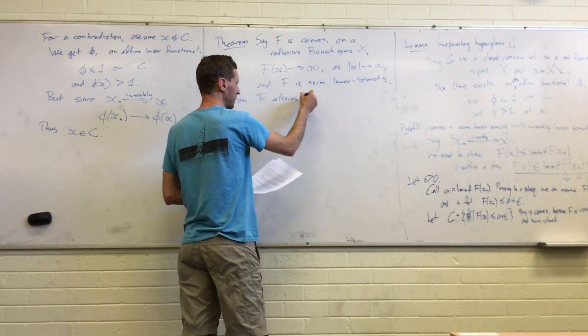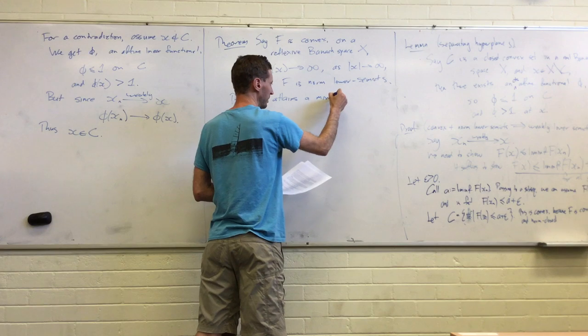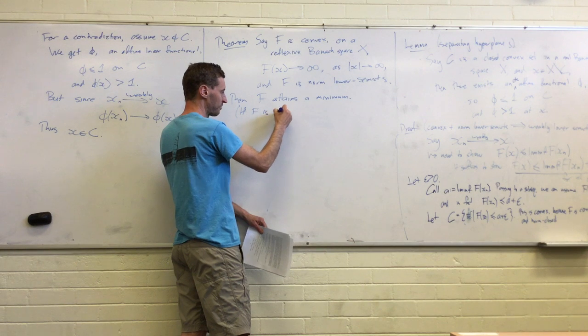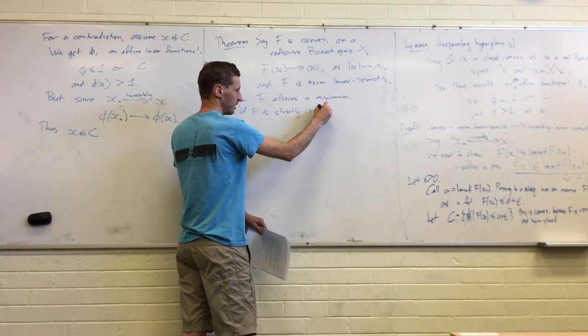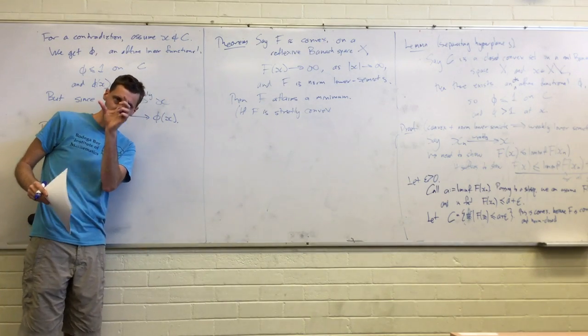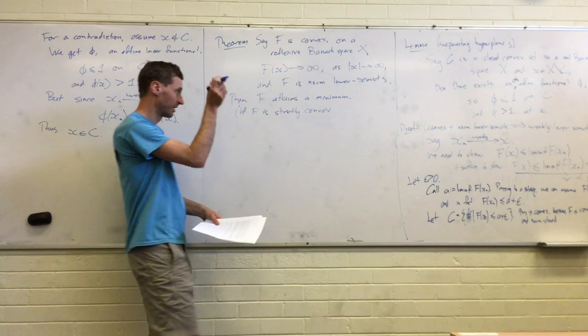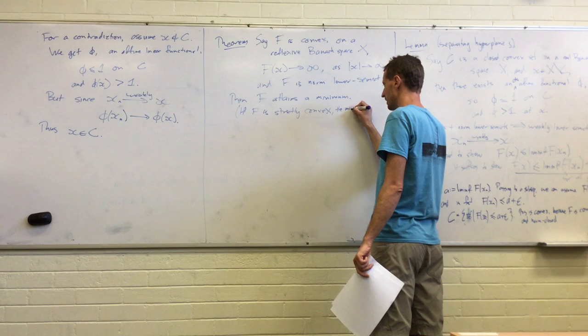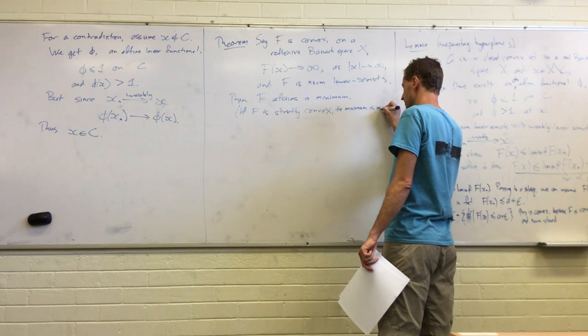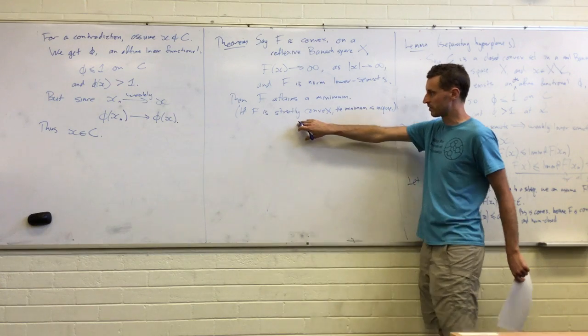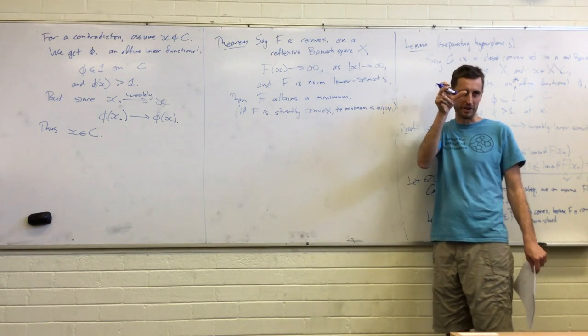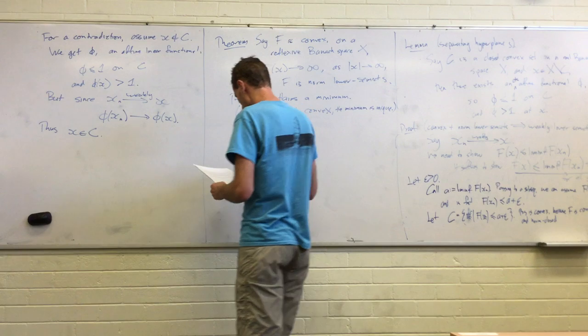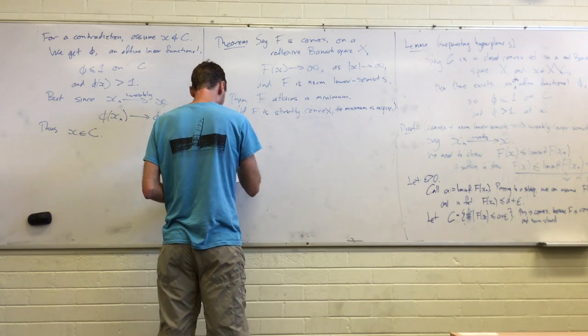And f attains its infimum. I mean, maybe a little easier side condition: if f is strictly convex, which just means that for all the points properly inside the interval, the value is strictly less than the corresponding combination of values, then the minimum is unique. That's a really soft fact, just about convex functions. If you had two different points, both achieved the same minimum value, everywhere between them, you'd have to have strictly smaller values.